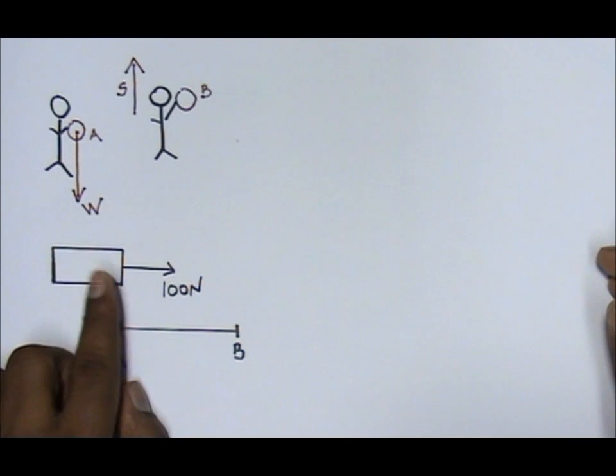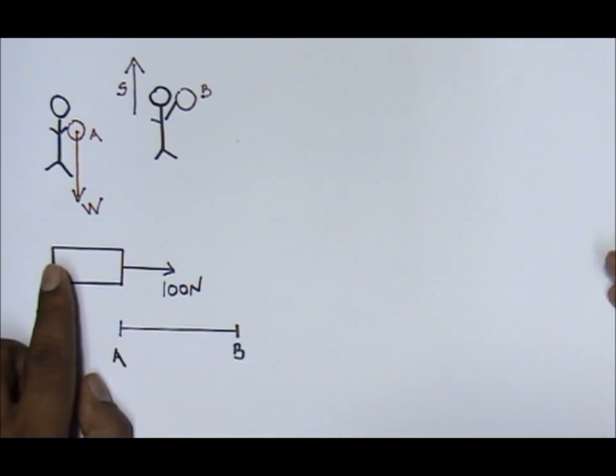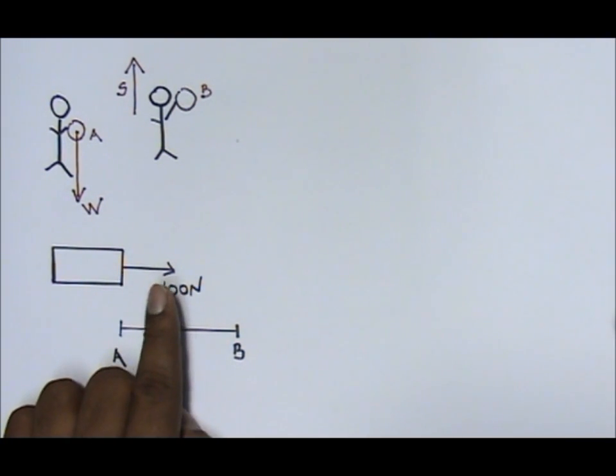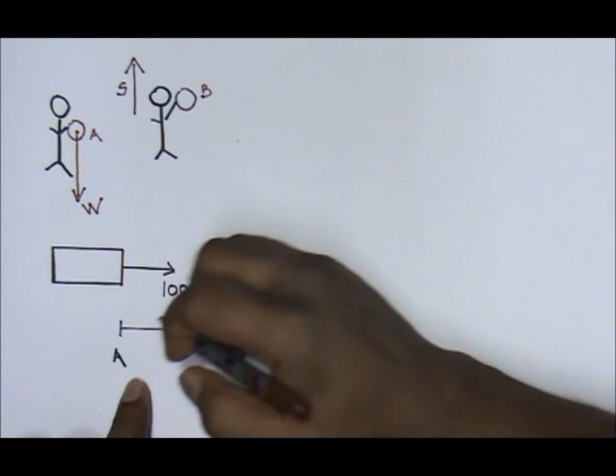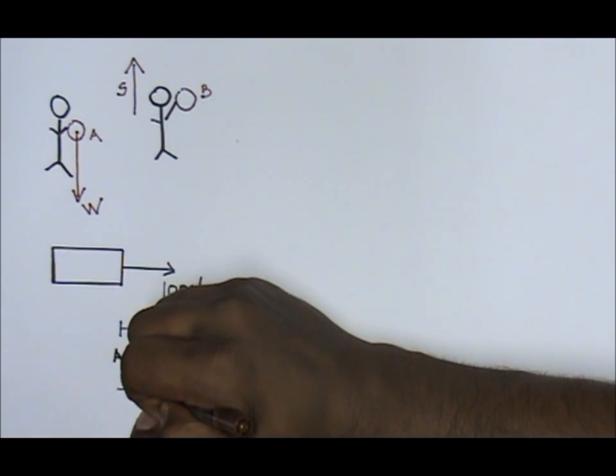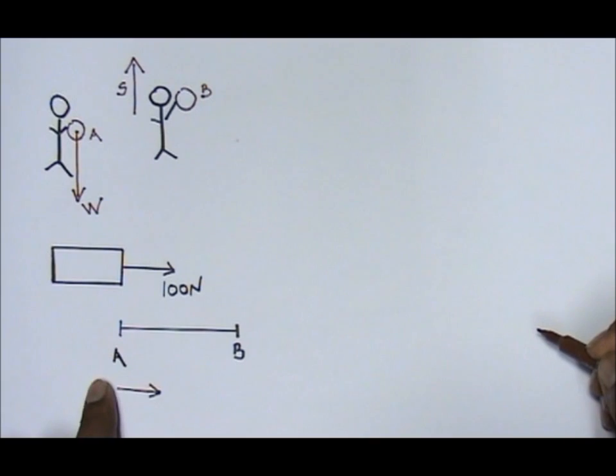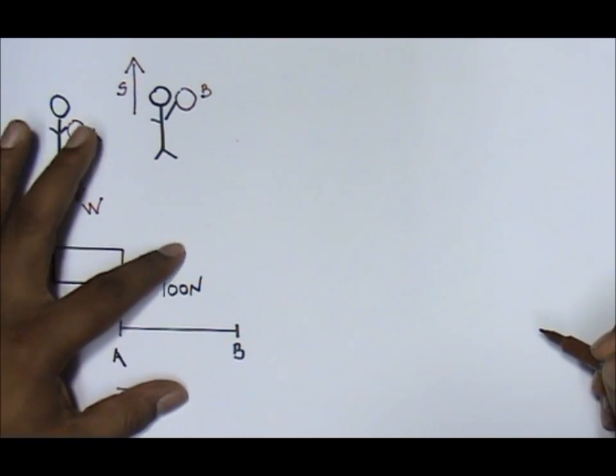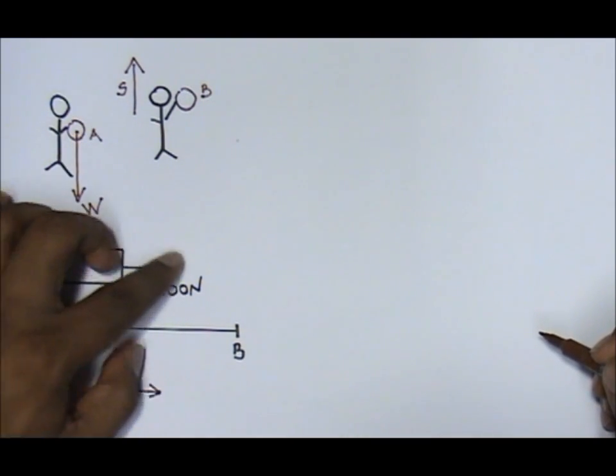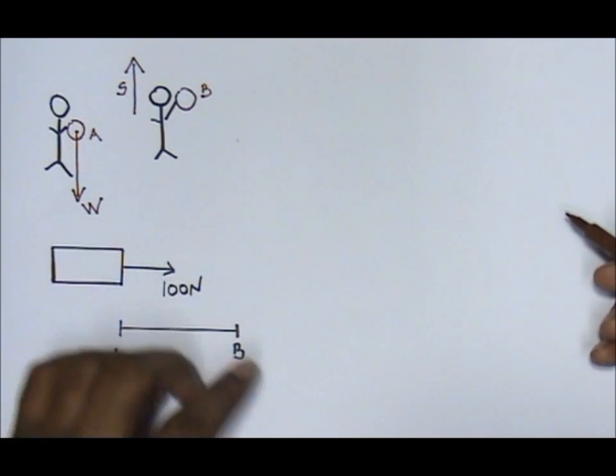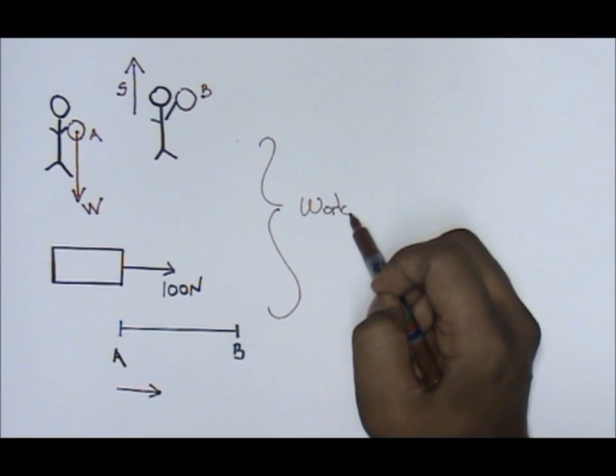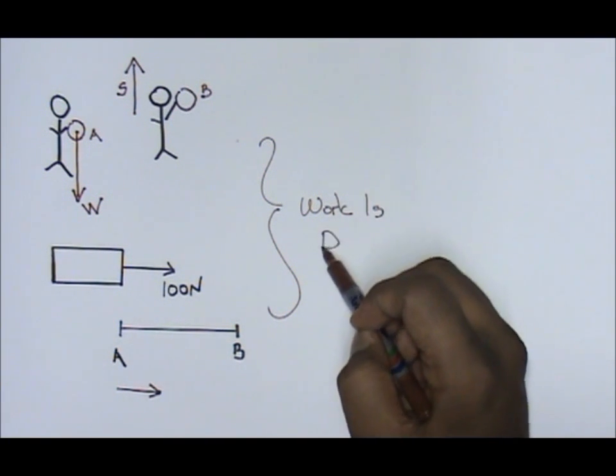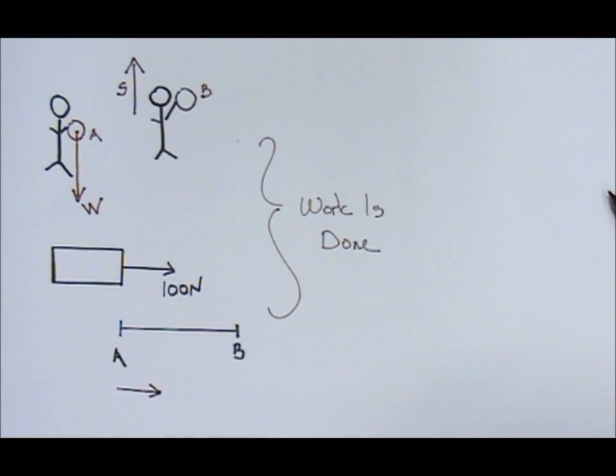If you look at the other example that we have here, this block over here is being pulled by a force of 100 newtons. Look at the direction of the force moving over here to the right, and this is the direction over here of the motion. The direction of the motion is also moving to the right. So, these two over here, we say both force and direction is parallel to each other. That's why these two examples, we say work is done.